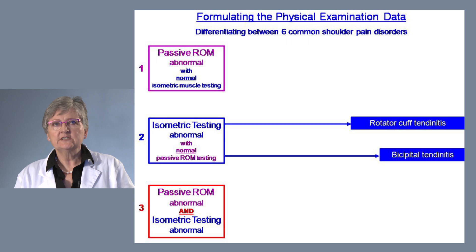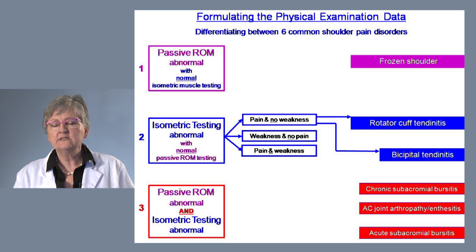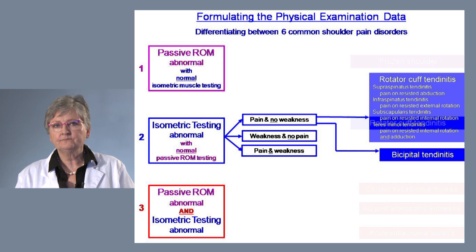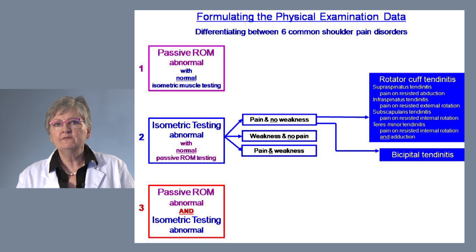Going back to the isometric muscle testing being abnormal — the two shoulder examples were rotator cuff tendinitis and bicipital tendinitis, both showing pain and no weakness. To distinguish between them: the rotator cuff is made up of supraspinatus, infraspinatus, subscapularis, and teres minor, and each of these muscles has a different function.